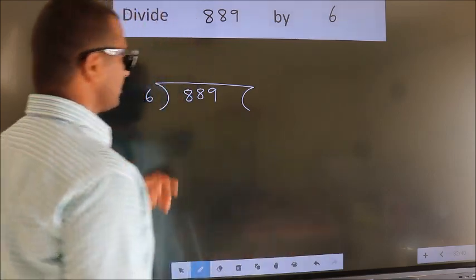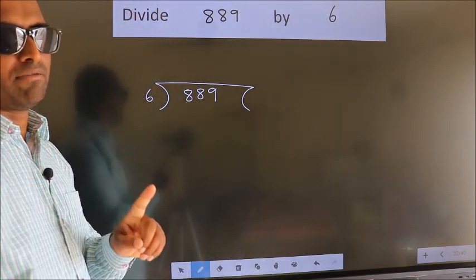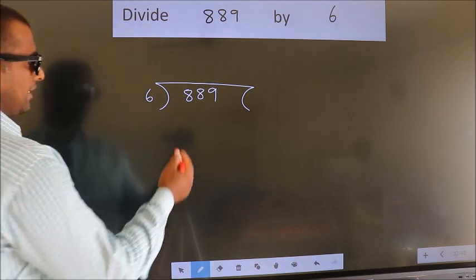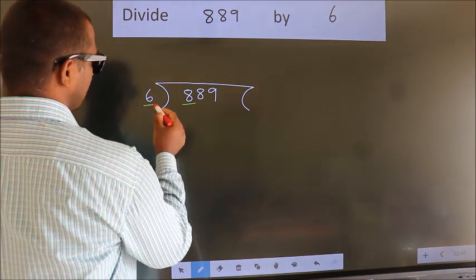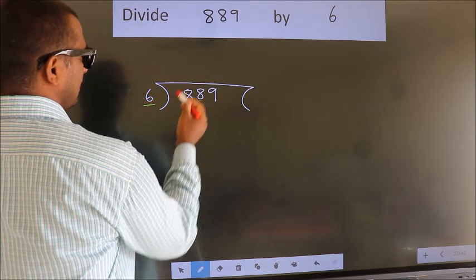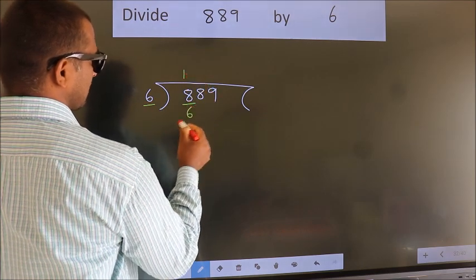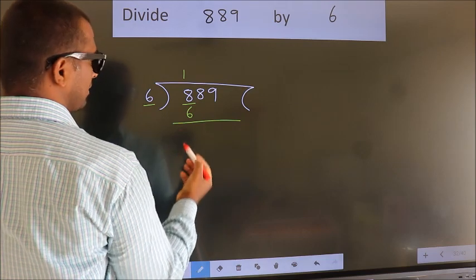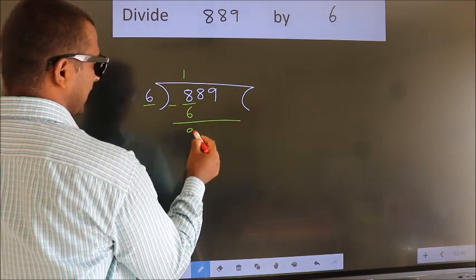This is your step 1. Next, here we have 8, here 6. A number close to 8 in the 6 table is 6 times 1, which is 6. Now, we should subtract. We get 2.